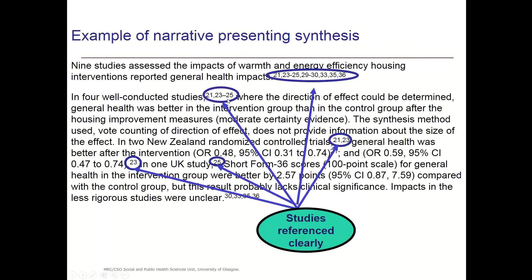We want to make sure that readers are really clear and it's transparent which studies are being referred to. Sometimes you see in a review it will say 'nine studies assessed whatever' and they'll reference the studies included in that comparison group, but then when they go on to talk about results in more detail, they don't say which studies they're referring to. We would like you to refer to the studies whenever you are referring to a specific group, because otherwise — if we say 'in four well-conducted studies' and these were not referenced — we wouldn't know which ones they were, and we wouldn't know where the greatest weight is being given to the evidence in the synthesis. So that's just about clear referencing.